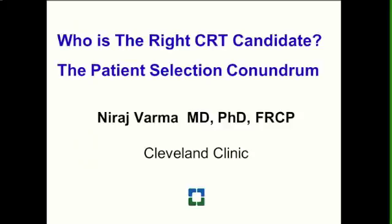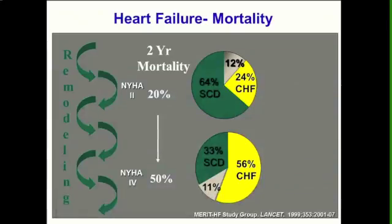I'm going to try and identify who is the right CRT candidate. This really is a patient selection conundrum and it's becoming more and more interesting as well as more and more difficult. We're trying to address heart failure mortality. As the left ventricle remodels and dilates, ejection fraction drops, functional class deteriorates, mortality increases. Ejection fraction less than 20%, functional class 4 has a two-year mortality rate of almost 50%. So this is really a disease like a cancer — it has greater morbidity and mortality than many tumors.